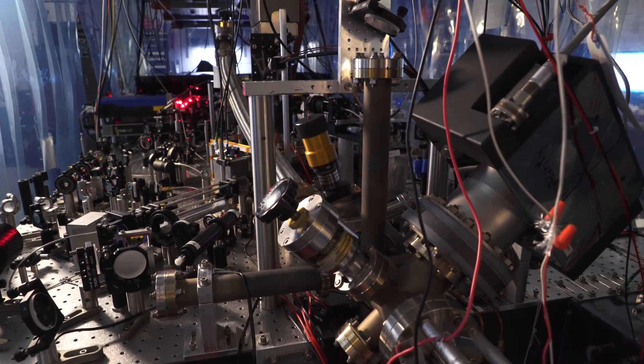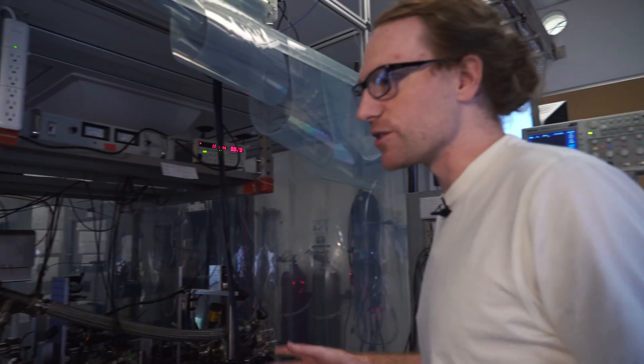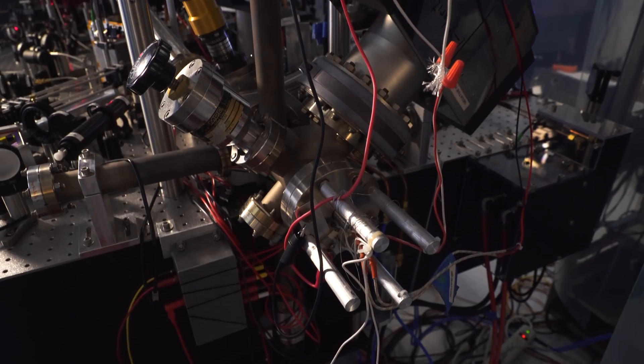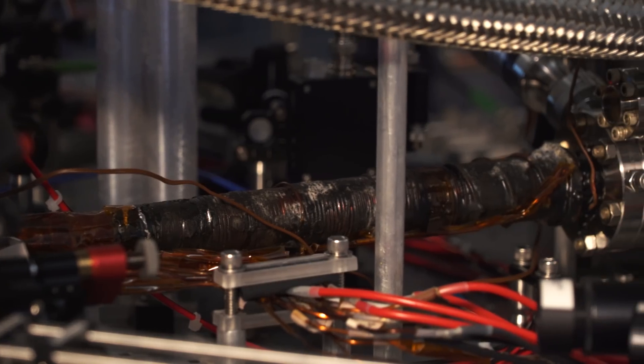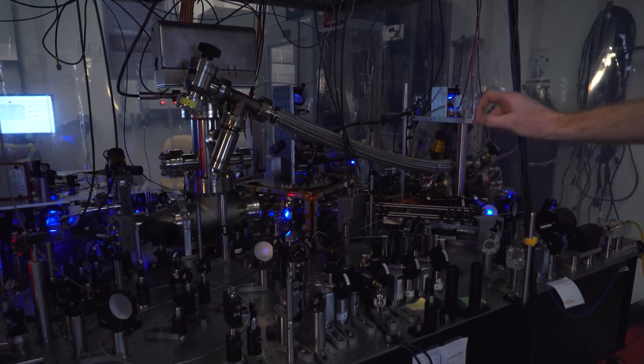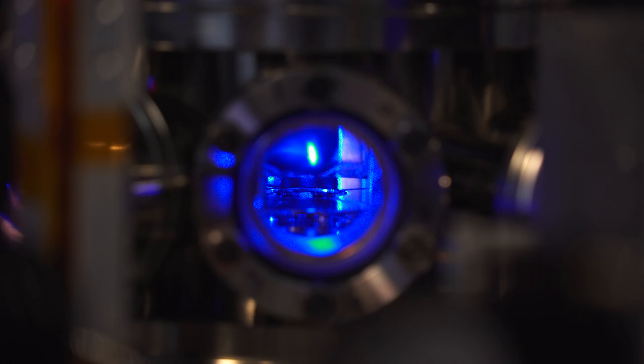What we're looking at here is basically all the infrastructure that's required to laser cool and trap atoms. Down there is the source, and these atoms come through this tube, then they occupy a very small volume in this central chamber. All the action happens in this very small volume.